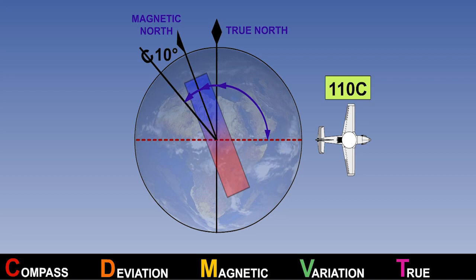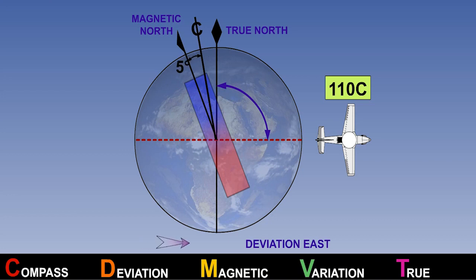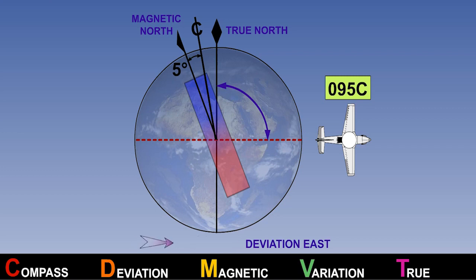Deviation is classed as easterly or positive, or westerly or negative, depending on whether the compass needle lies to the east or west of magnetic north. If we were to assume that deviation was 5 degrees east instead of 10 degrees west, the compass heading in our example would be 095 degrees. It is possible to remove a large amount of deviation error by appropriate calibration and correction of the compass. This process is called a compass swing, which we will look at next.